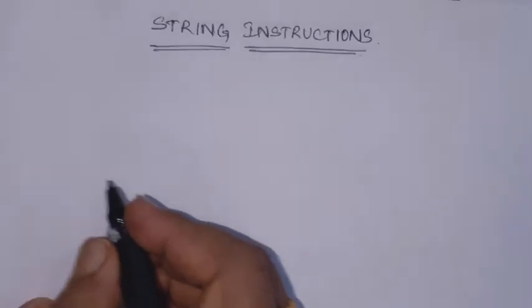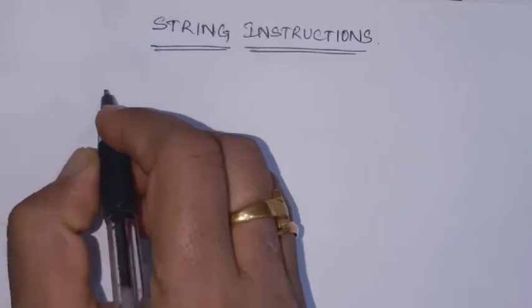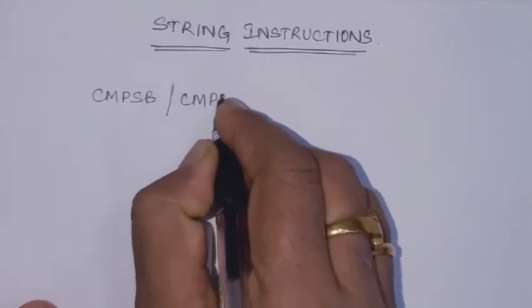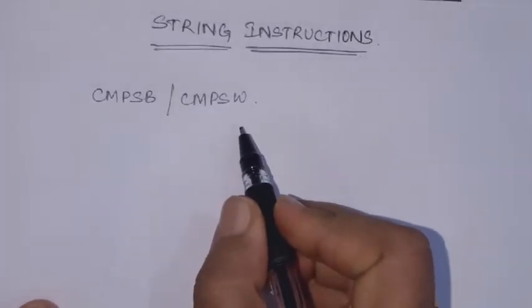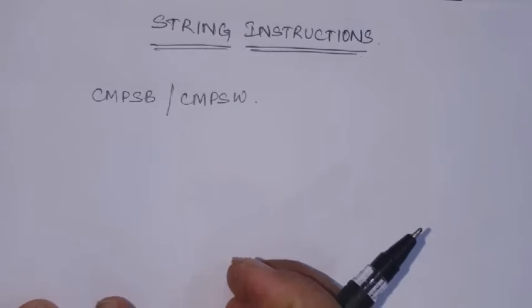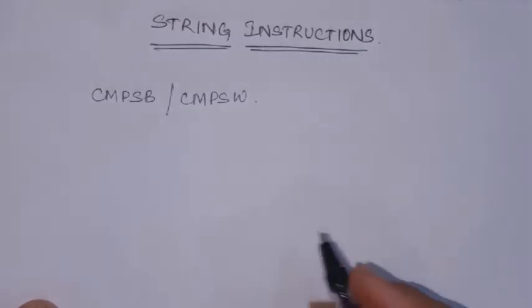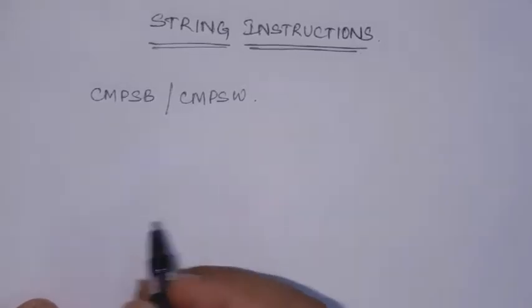Hello students, let's continue with the string instructions. In the last video we discussed MOVSB. Another string instruction is Compare String Byte or Compare String Word. This instruction is used to compare two strings. The source string is compared with the destination string, and automatically the source index register and destination index register contents are incremented by one to point to the next byte.